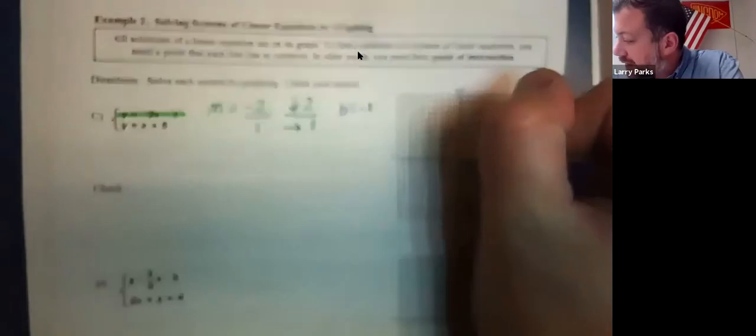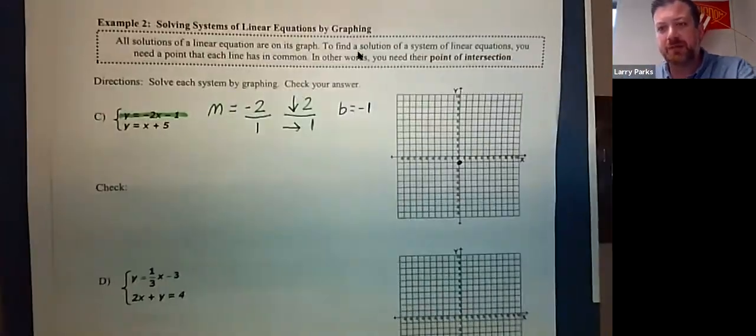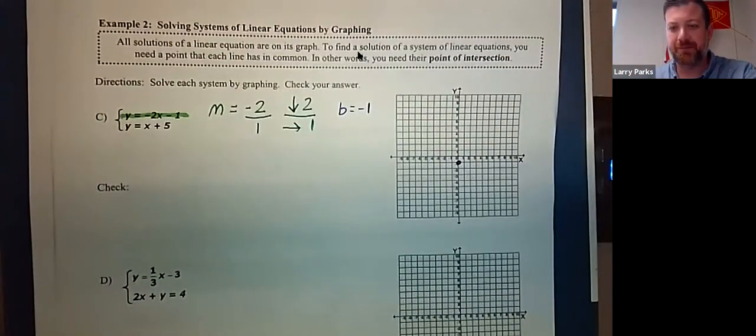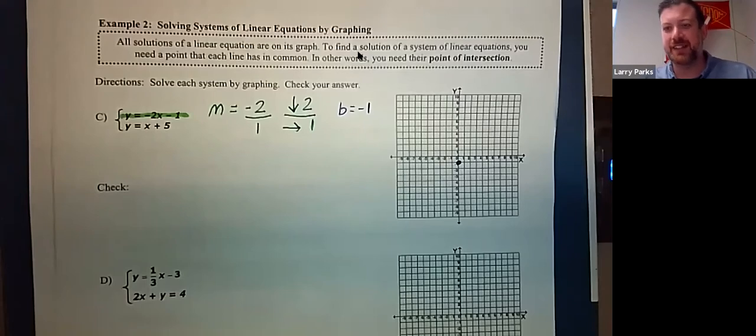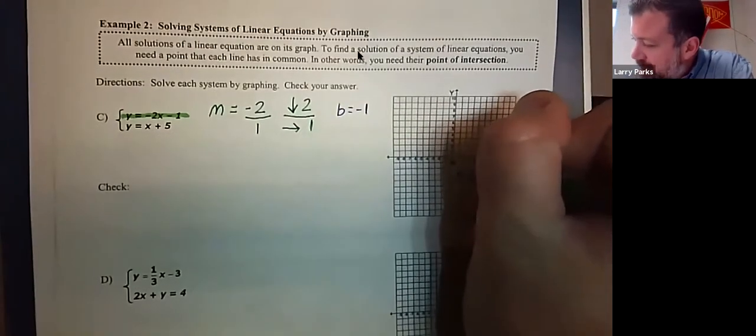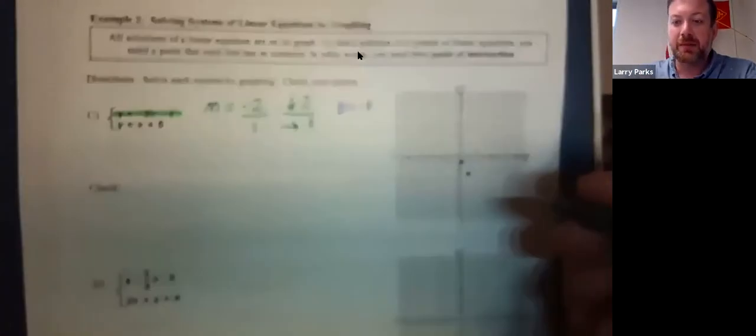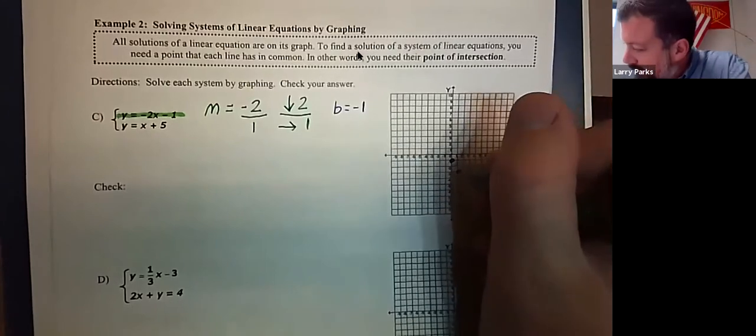So on my graph, that's where I start. I start at negative 1. Are you all able to see that okay? Is it clear? Good. So I start at negative 1. And then from negative 1, I am going to drop 2 and go over 1. So I'm going to drop 2, go over 1. And then I'm going to drop 2, go over 1.